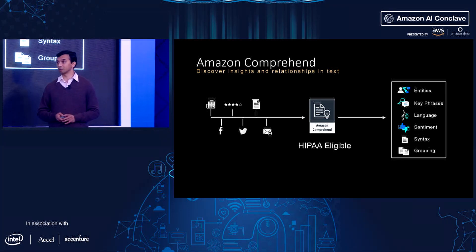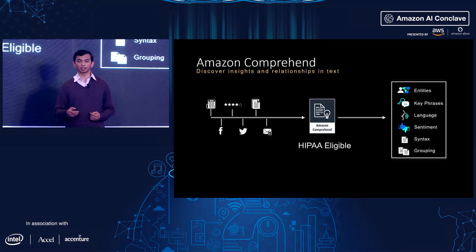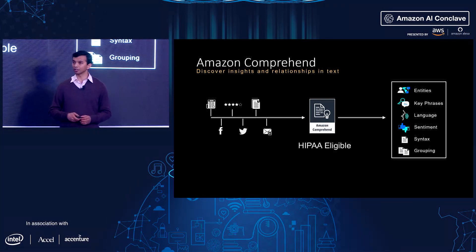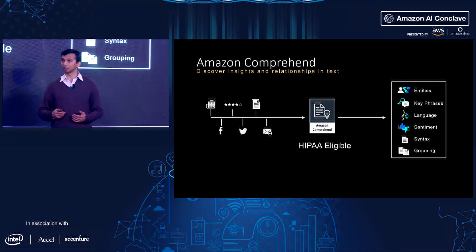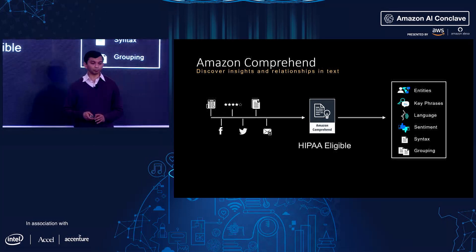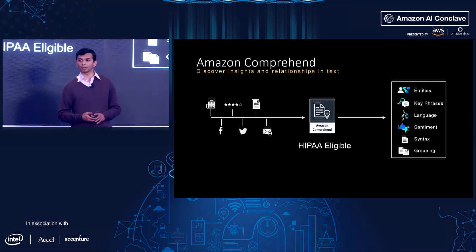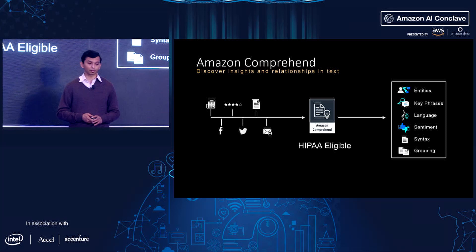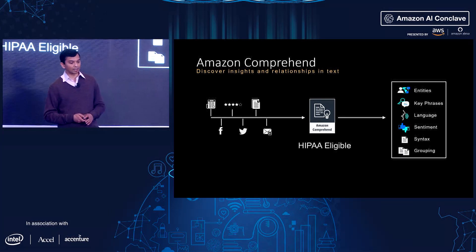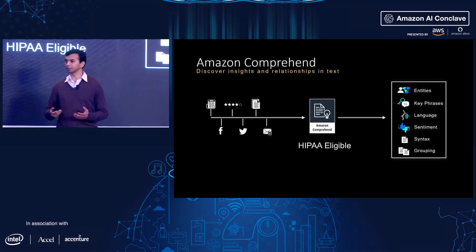Comprehend also identifies the language of the text — useful for operational use cases like routing support emails from across the world to the right queue for associates that speak that language. Sentiment analysis: it does positive, negative, mixed, and neutral sentiment. Syntax: it tags nouns, adjectives, and so on for tighter understanding of text for aspect-based sentiment. And you can group documents together using the topic modeling service — it's essentially a managed service to do LDA.